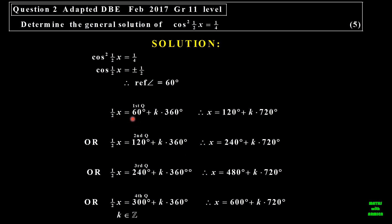So the first quadrant is half x equal to 60, and to simplify that, x is equal to 120 plus k times 720. The second quadrant is 180 minus 60, which is 120. Half x is equal to 120 plus k times 360, so x is 240 plus k times 720. Next, half x is 240, so x is equal to 480 plus k times 720. Fourth quadrant is 360 minus 60, which is 300. So half x equal to 300 plus k times 360, therefore x will be equal to 600 plus k times 720, where k is an element of the integers.